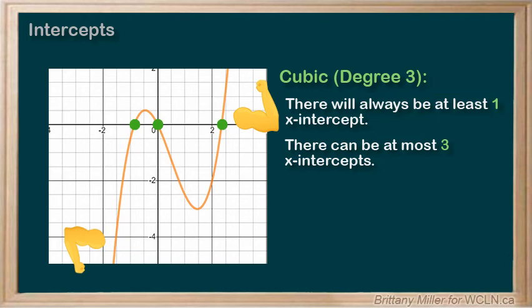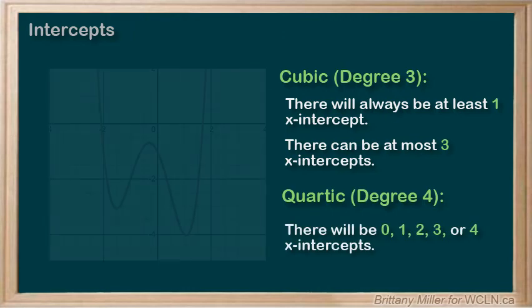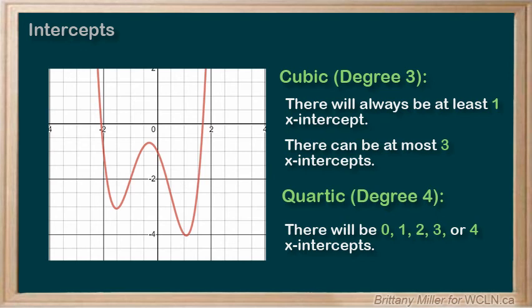Are you sensing another pattern? How many intercepts do you think a quartic, or degree 4, equation can have? If you guessed 0 to 4, you're right. It has an even degree, so it can have 0 roots. And the degree is 4, so it will have at most 4 roots.